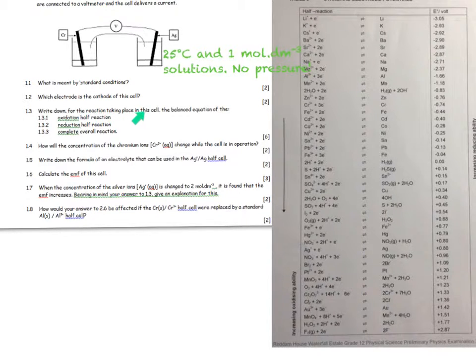Write down the reaction taking place in this cell, the balanced equation for the oxidation-reduction half reaction. First we need to identify our two half cells: the chromium half cell and the silver half cell. Silver is lower down so we're going to write chromium backwards—that's the oxidation—and silver forwards—that's the reduction.